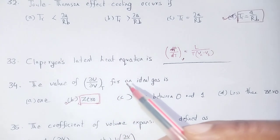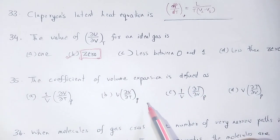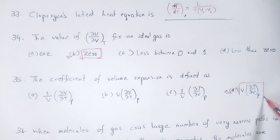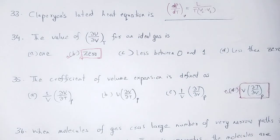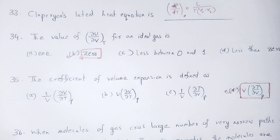The coefficient of volume expansion is defined as: you have to remember the mathematical formula. The coefficient of volume expansion is equal to (1/V)(del V/del T) at constant pressure.